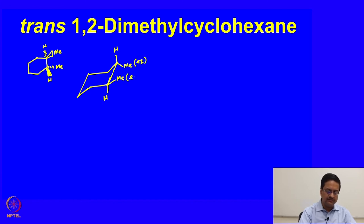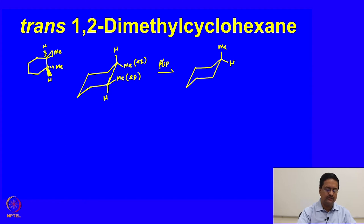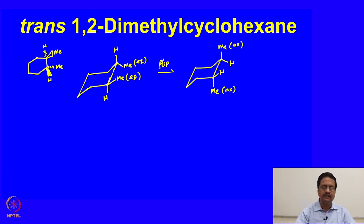When we flip this conformer, the methyl here would go up, the hydrogen would come down, this hydrogen will go up, and this methyl will come down. So it becomes di-axial from di-equatorial.